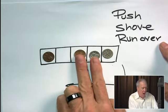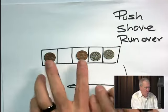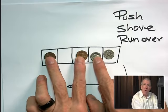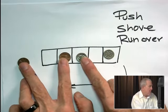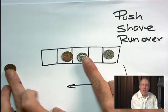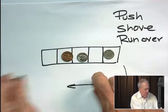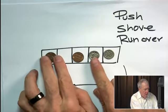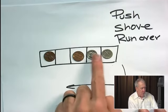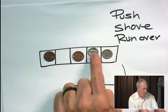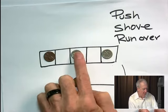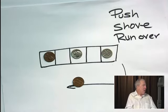In shove, when you push a coin over, everything to the left moves over one space also. So in shove, this coin over here gets thrown off the cliff here. In run over, what happens is, when you push this coin over here, one to the left, you run over that person and that coin disappears from play.